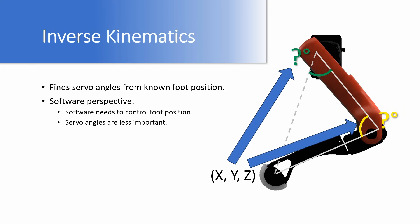Inverse kinematics, however, go in the opposite direction. They find a servo angle from a known foot position. This is more of a software perspective. Software usually needs to control the position of the foot. It doesn't care so much about the angles of the servos. It does, however, need to calculate the angles of the servos in order to feed the hardware.